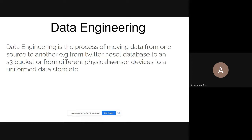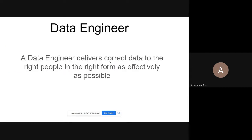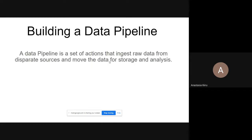Data engineering delivers correct data to the right people in the right form as effectively as possible. It is the first step before doing machine learning — preparing the data, making sure it's in the right format, removing duplicates. There is so much pre-processing that happens before machine learning. One of the big things involved in data engineering is building a data pipeline, which is a set of actions that ingests raw data from disparate sources and moves the data for storage and analysis.